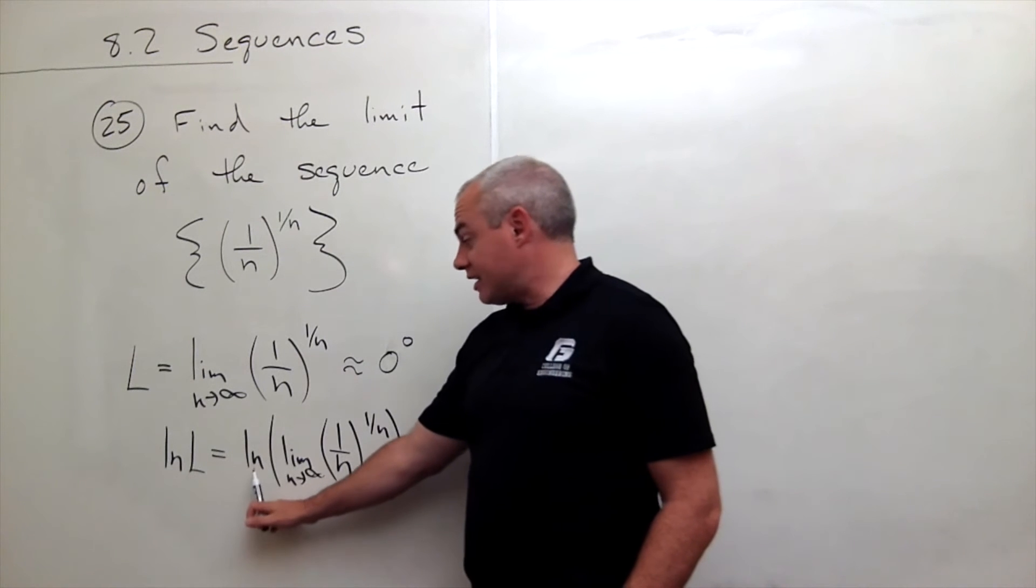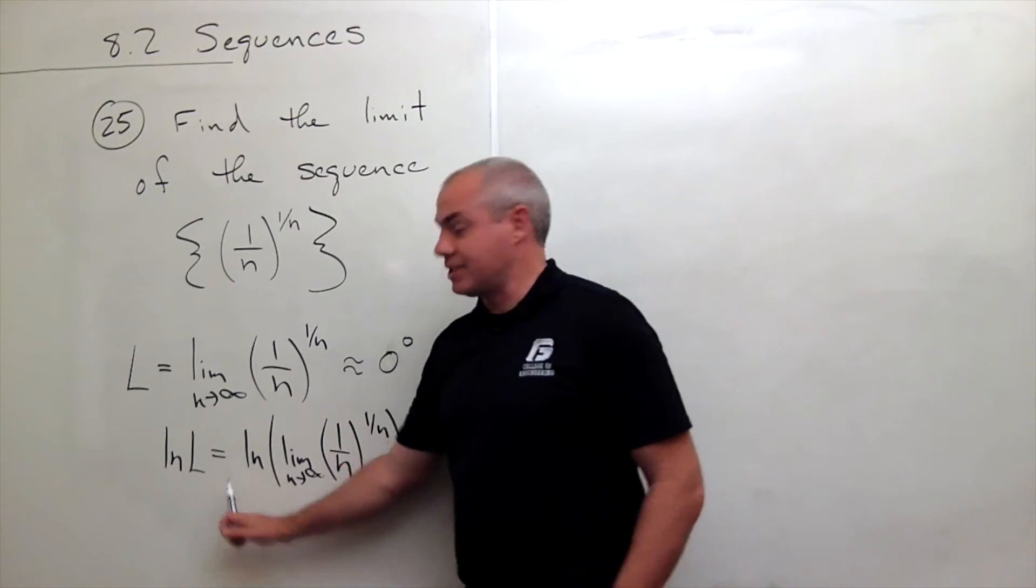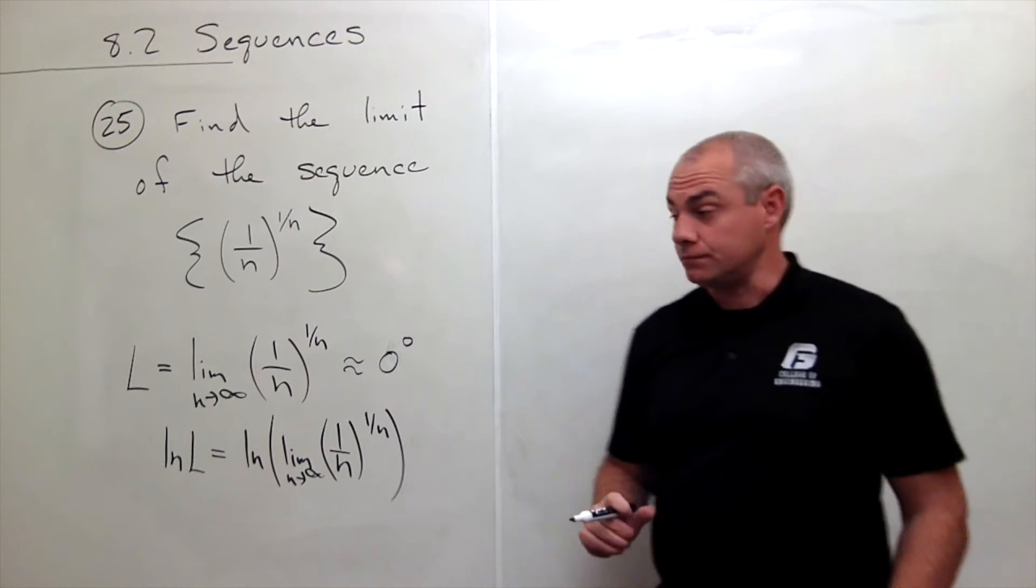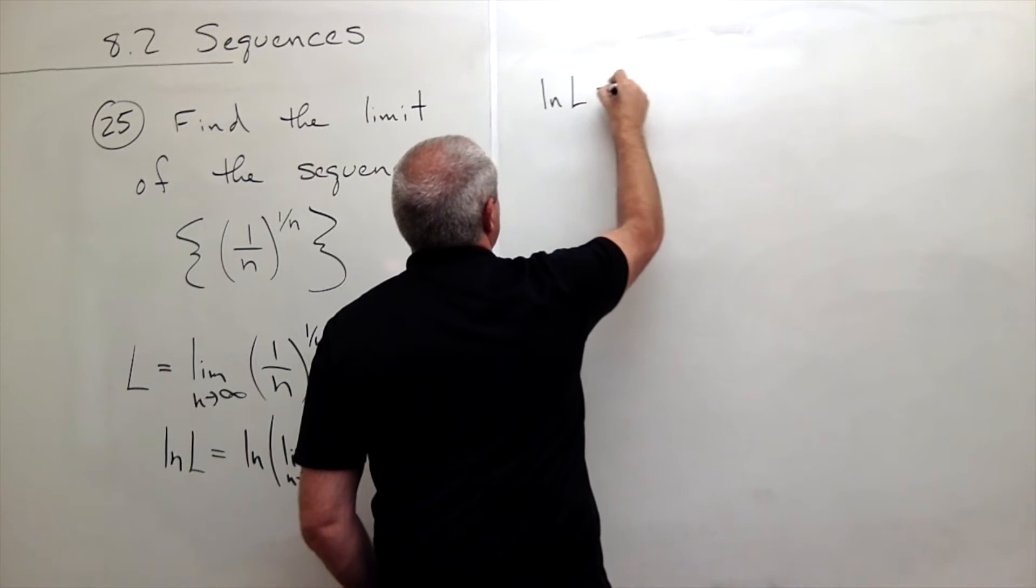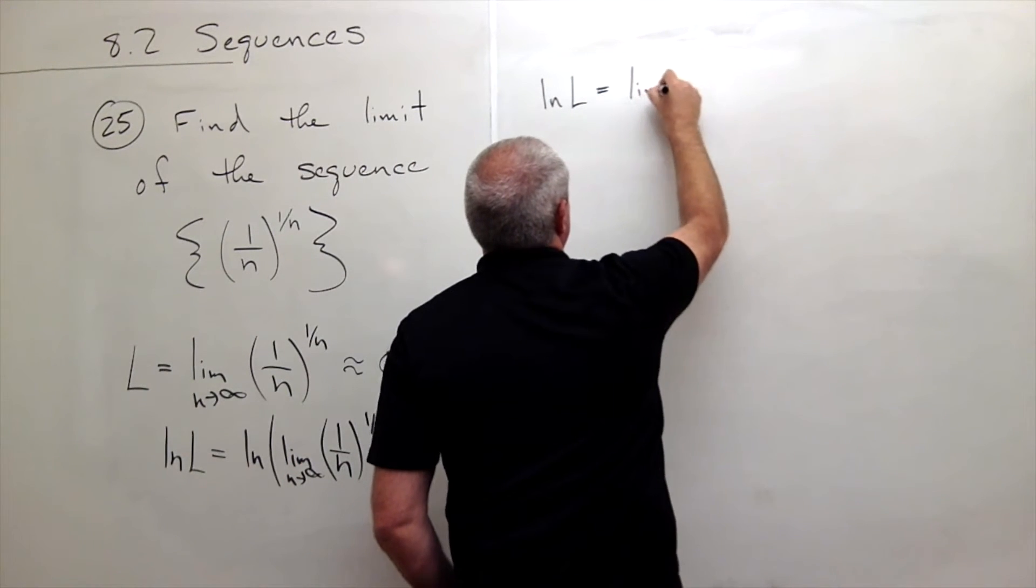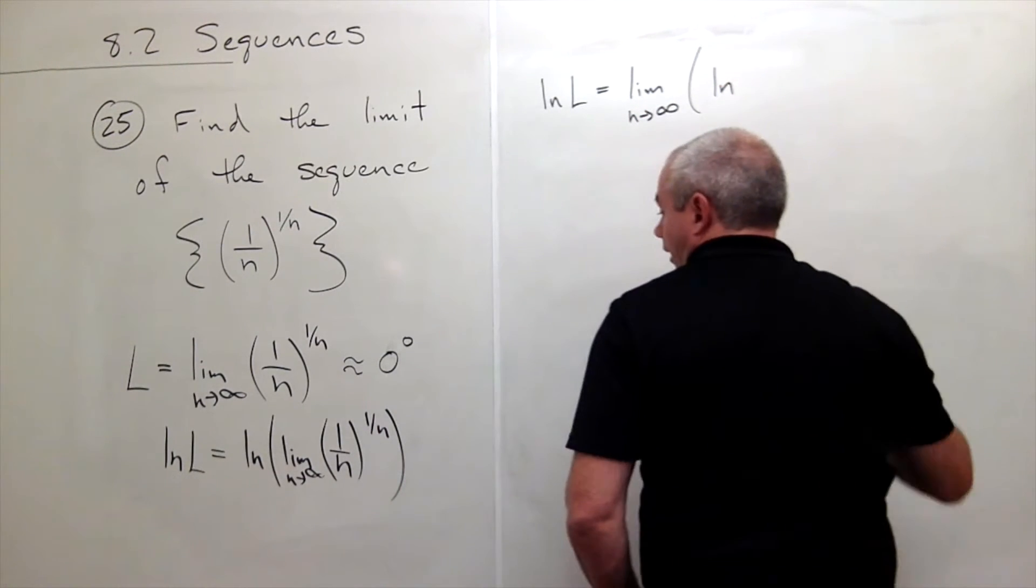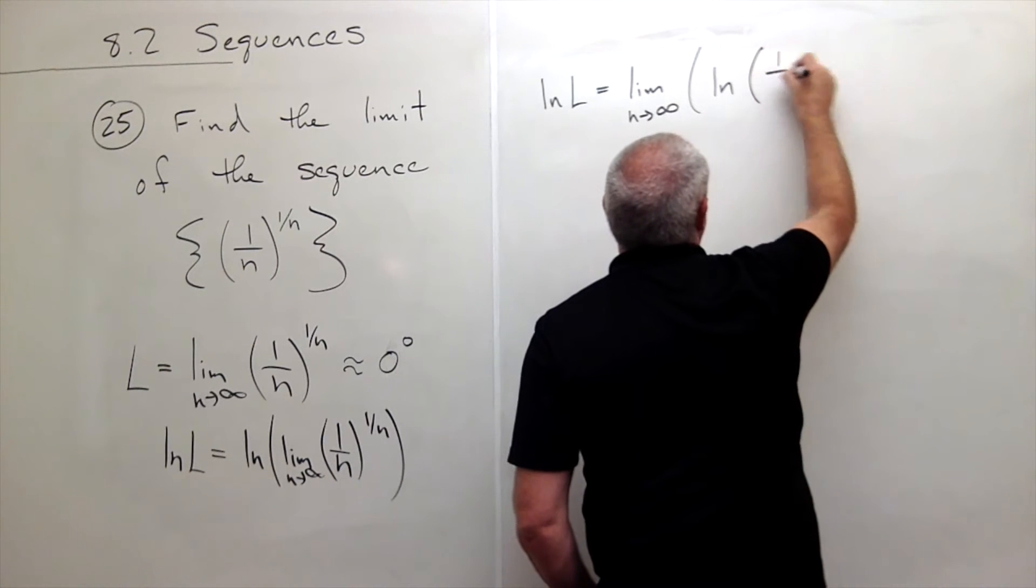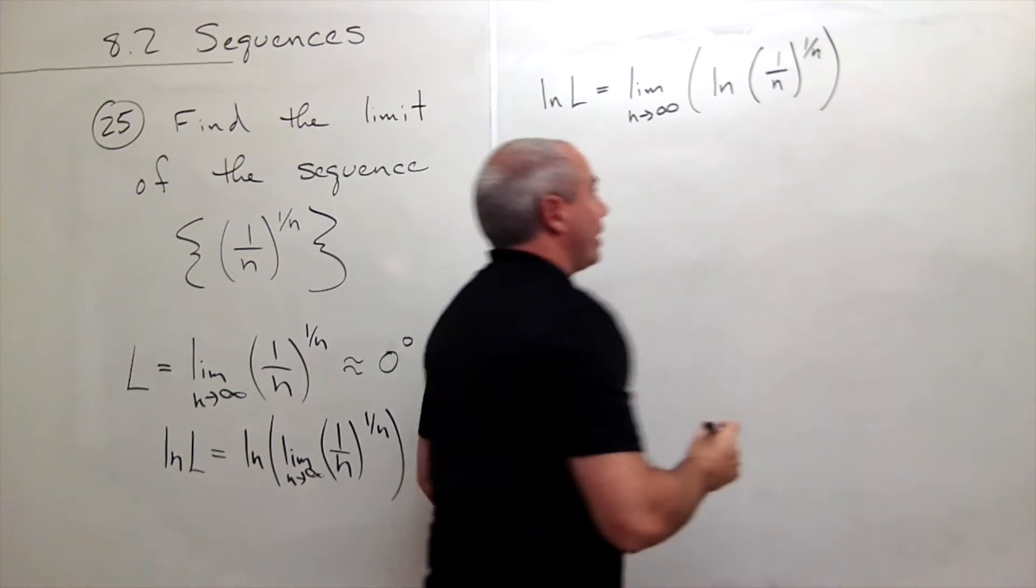Now, because natural log is a continuous function, I can move the limit outside of the natural log and I can rewrite this way. I get that ln of L is equal to the limit as n goes to infinity of ln of 1 over n raised to the 1 over n.